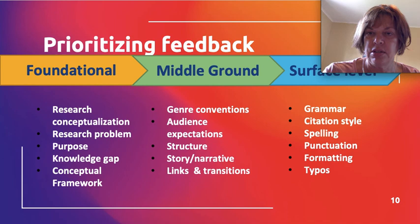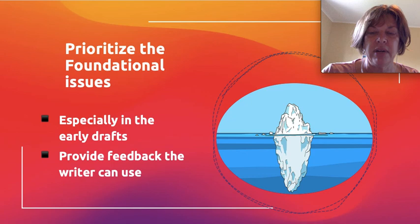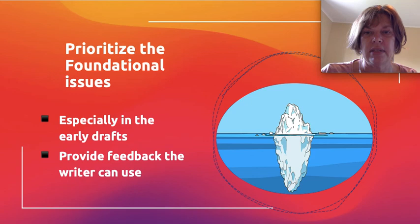Then you can look at the surface level issues after that. Prioritizing feedback depending on where the person is in terms of their drafts is really important. The more surface level issues can be fixed fairly easily. But if the foundational issues are not in place, it doesn't matter how much you edit those surface level things — it won't change the structure of the document. So particularly in the early drafts, think about these foundational issues and provide feedback the writer can use.